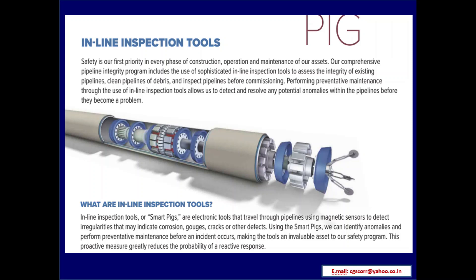Safety is the first priority in every phase of construction, operation, and maintenance. The comprehensive pipeline integrity program includes the use of sophisticated inline inspection tools to assess the integrity of existing pipelines, clean pipelines of debris, and inspect pipelines before commissioning. Performing preventative maintenance through inline inspection tools allows detection and resolution of potential anomalies within pipelines before they become a problem. This shows the view of the pig arrangements using internal cleaning of the pipeline system.